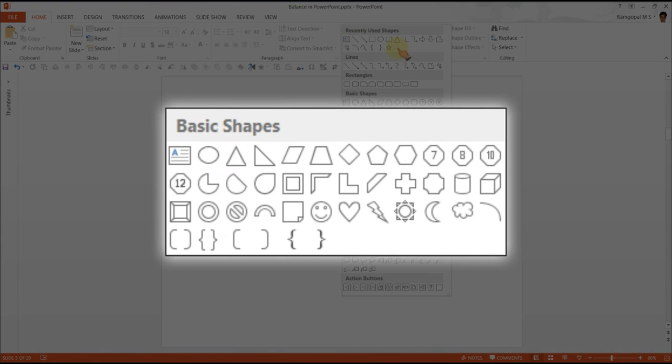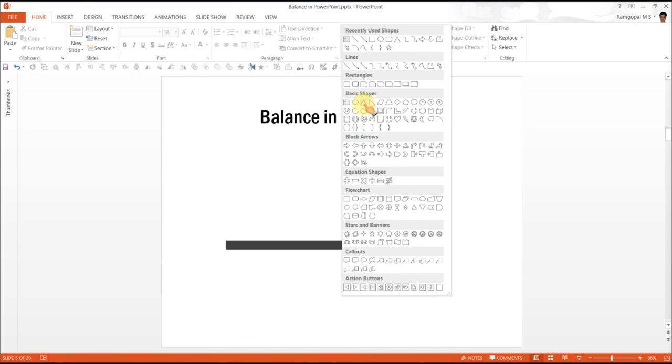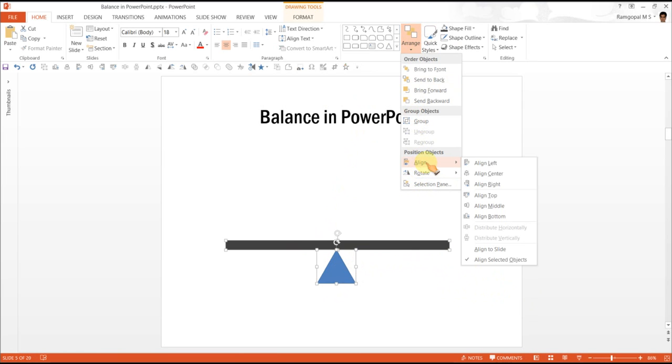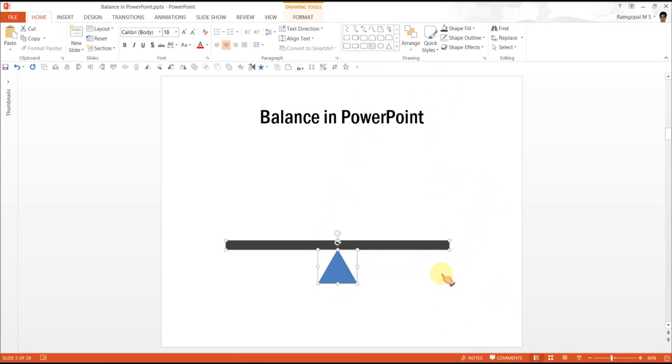The next step is to create the fulcrum. Once again we go to auto shapes menu and under basic shapes, pick up this particular tool called isosceles triangle. While holding the shift tab, draw the isosceles triangle. Now it is essential that this triangle is in the center point here. So we are going to select this, and while holding shift tab we will also select the plank and go to arrange, align and align center. Now we can be sure that this one is in the middle.